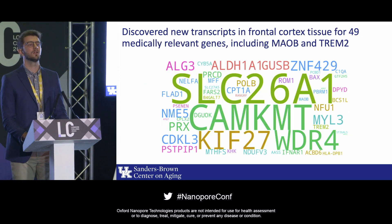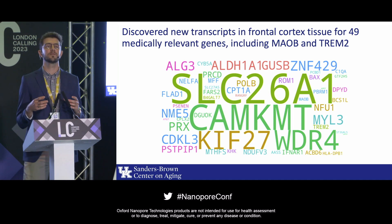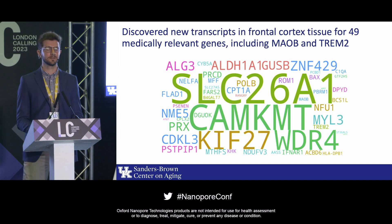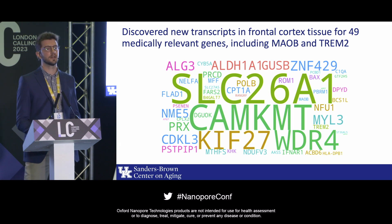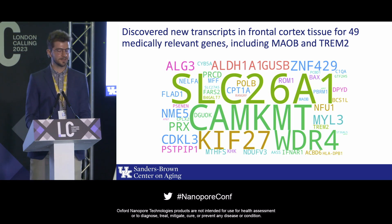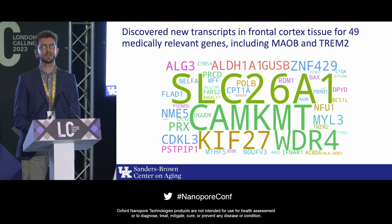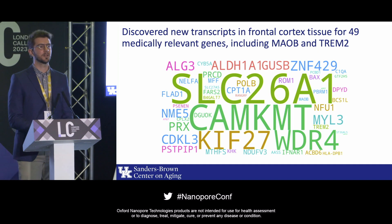Looking at the medically relevant genes, this word plot shows the gene name for all medically relevant genes for which we found a new transcript. The size of the gene name is proportional to the amount of reads that came from the new isoform. For example, for SLC26A1, 86% of reads came from a new isoform, whereas for TREM2 on the bottom right, 16% of reads came from a new isoform.